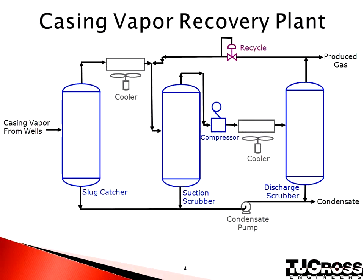A casing vapor collection piping network is designed to gather gas from all of the wells to a casing vapor recovery plant, which is typically located in a low spot of a field. This plant is designed to cool the hot vapor and remove the condensing steam. The vapor is first directed to a slug catcher vessel to remove any liquid slugs. The vapor is cooled in a fin fan cooler to 20 degrees Fahrenheit above ambient temperature and directed to a suction scrubber for further separation of condensed liquids. The gas is compressed and cooled again to 20 degrees Fahrenheit above ambient temperature for removal of final liquids in a discharge scrubber. The produced gas is sent to low pressure fuel and the condensates are pumped to a production system.